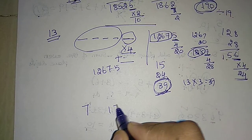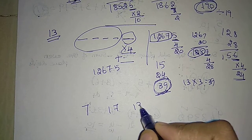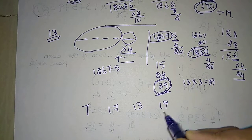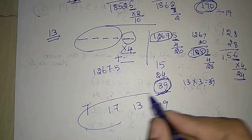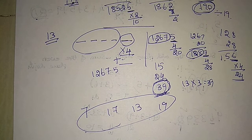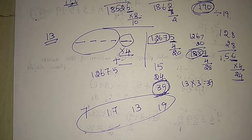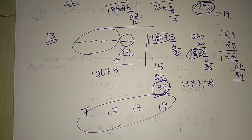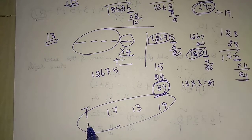So for all four numbers — 7, 17, 13, and 19 — the divisibility tests follow the same overall procedure.